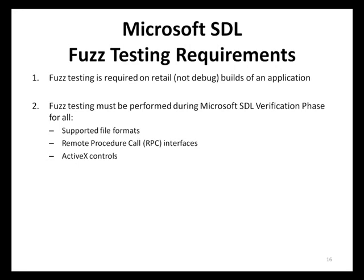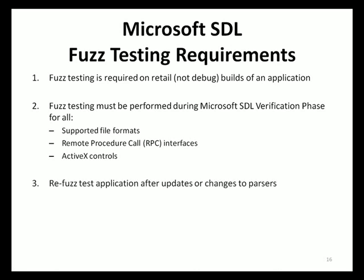While all entry points into an application can potentially be attacked and should be fuzz tested, certain types of entry points are particularly at risk in Microsoft's experience: files that are read by applications, remote procedure interfaces, and ActiveX controls. Any application that contains these types of entry points must have these entry points fuzz tested. Additionally, any time an application is updated or parsers are re-engineered, that application must be re-fuzz tested to help ensure that new vulnerabilities have not been introduced into the application implementation.